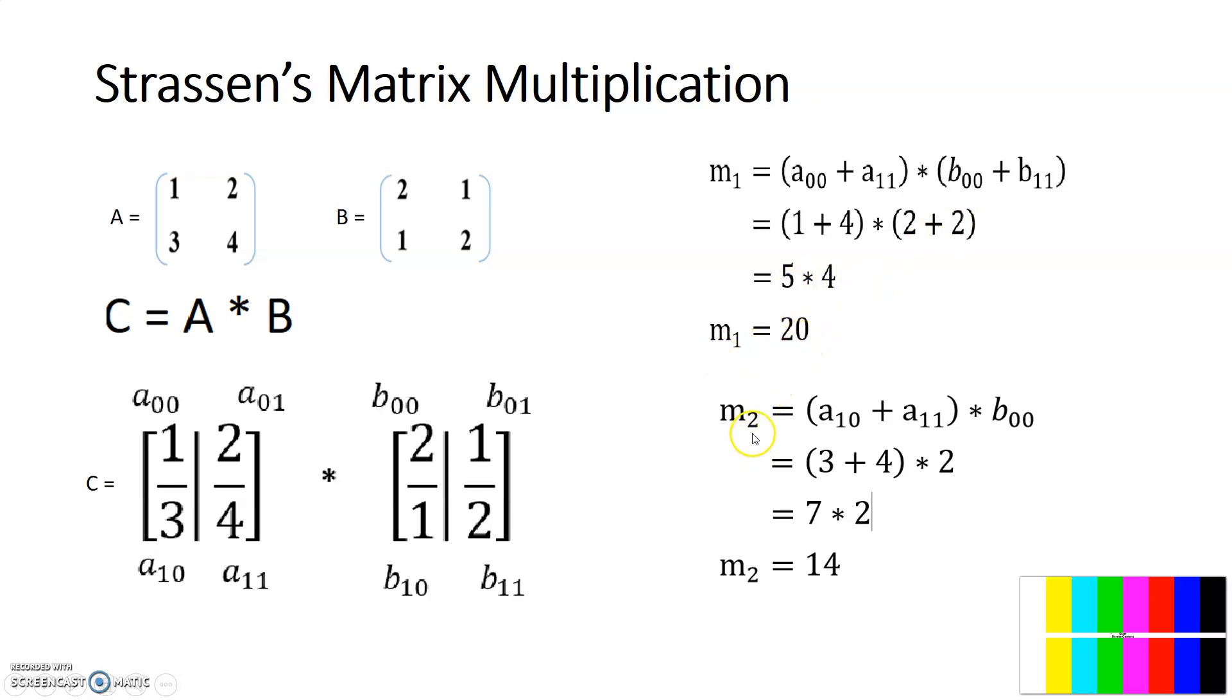In the same way, you have to calculate M2 value using this equation. That is A10 plus A11 into B00. A10 value is 3, A11 value is 4, B00 value is 2. Now 3 plus 4 is 7, and into 2, that is 7 into 2, that is 14. So this is the M2 value.